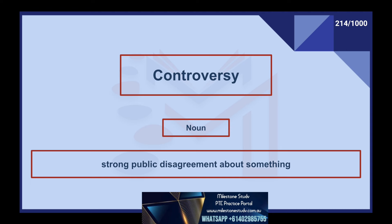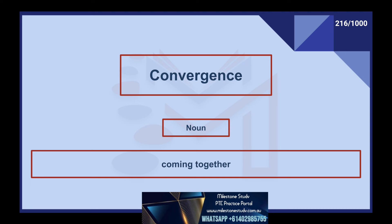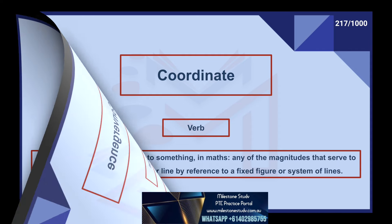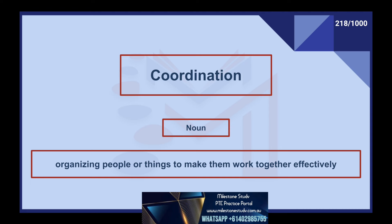Controversy, noun: strong public disagreement about something. Converge, verb: to come together. Convergence, noun: coming together. Coordinate, verb: to bring order and organization to something. In maths, any of the magnitudes that serve to define the position of a point or line by reference to a fixed figure or system of lines. Coordination, noun: organizing people or things to make them work together effectively.